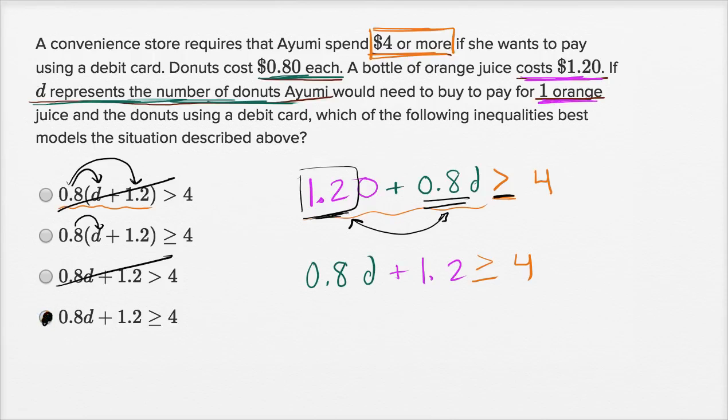Now, if you're doing this in really kind of timed conditions, instead of even doing this, you could go straight to see, well, which of these really describes what's going on here? We want to be greater than or equal to $4.00, we're going to spend $1.20 on orange juice, and then the amount that we spent on donuts is that right over there, so you might have been able to just cut to the chase and pick that one, whichever way works better for you.